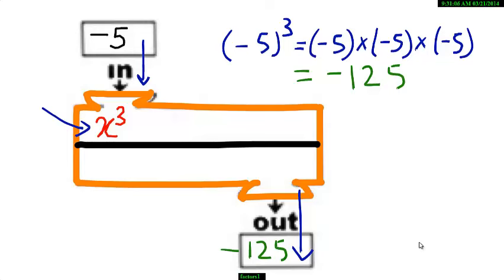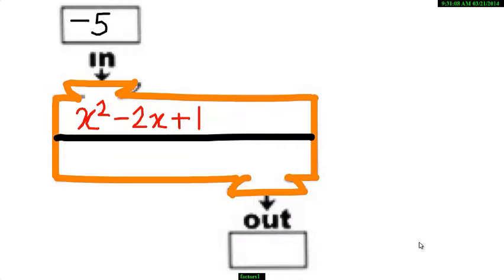Let us try another example. The algebraic expression or rule this machine follows is x square minus 2x plus 1. Now, if minus 5 enters this machine, then what happens?